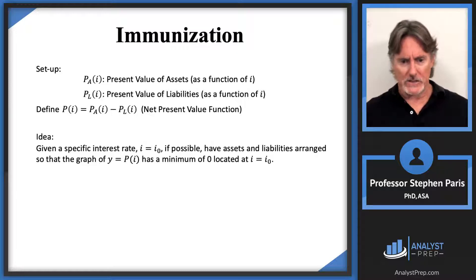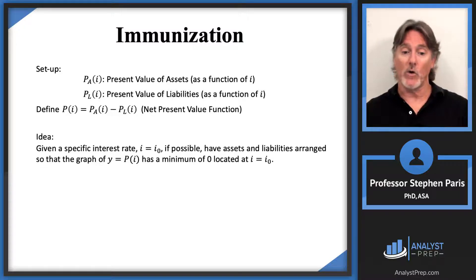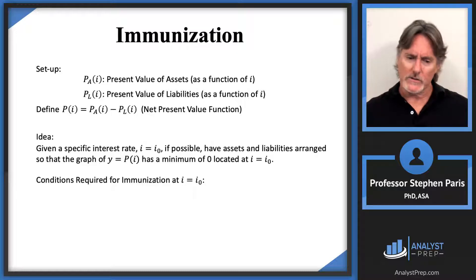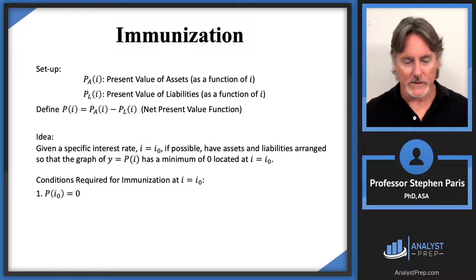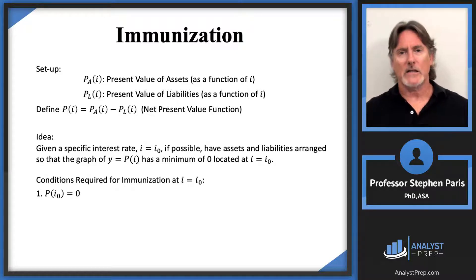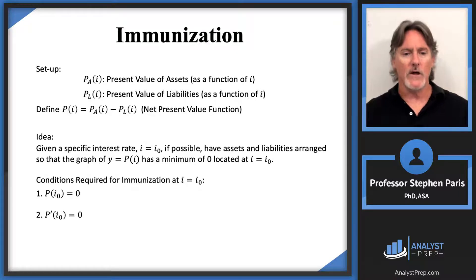Let's peel away at this idea and extract some mathematics. First, the minimum has a value of zero, so the net present value function evaluated at I-naught equals zero. Those are the conditions required for immunization. The first condition: the value of the net present value function must be zero when you plug in I-naught, because it's a minimum of zero. Now focusing on the word minimum: from calculus, minimums occur at critical points where the derivative equals zero. So the second condition is that the derivative of the net present value function at I-naught must equal zero — I-naught is a critical value.